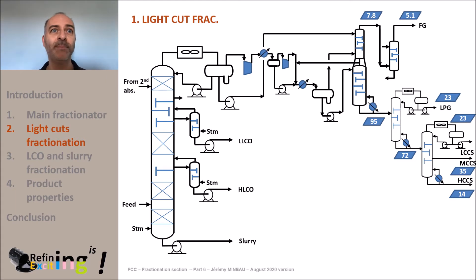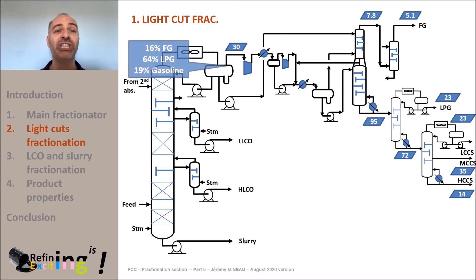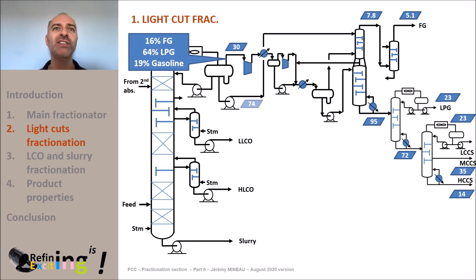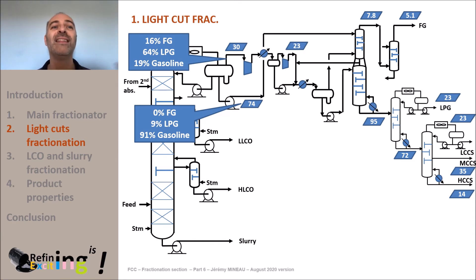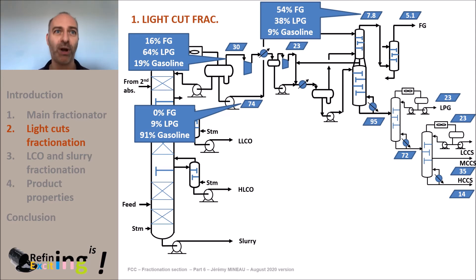As a conclusion of this part, we started from a 30 tons per hour overhead gas flow fairly evenly distributed in fuel gas, LPG, and gasoline. Note that we also had a 74 tons per hour mixture of LPG plus gasoline. The two compression stages condensed the heavy part of the gas flow and reduced it down to 23 tons per hour. These 23 tons per hour were then enriched in C1 plus C2 in the primary absorber, with gas concentration in C1 and C2 increasing to 54% (plus 40 points), LPG at 38% (minus 30 points), and gasoline at 9% (minus 10 points).